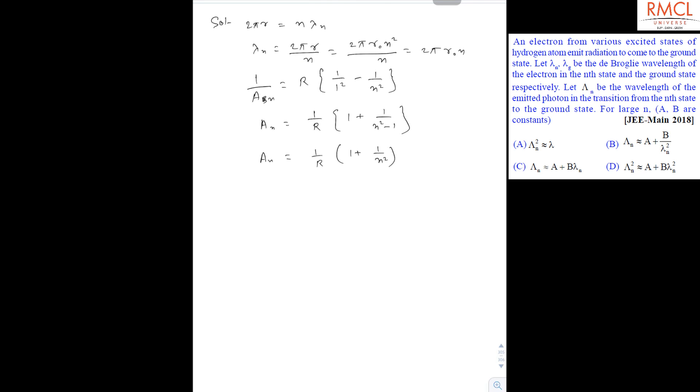So from these two equations we can write An is equal to 1 upon r times 1 plus 4 pi square r0 square upon lambda n square. So it is a plus b upon lambda n square.